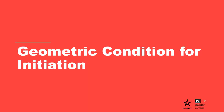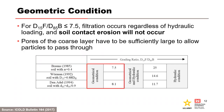The geometric condition is assessed by comparing the D15 of the filter, or coarse material, to the D85 of the base, or fine material. If the geometric condition is not met — which requires a ratio of D15 of the filter to D85 of the base to be less than or equal to 7.5 — then soil contact erosion is unlikely. If the geometric condition is met, with the ratio of D15 of the filter to D85 of the base being greater than 7.5, the hydraulic condition must be assessed.